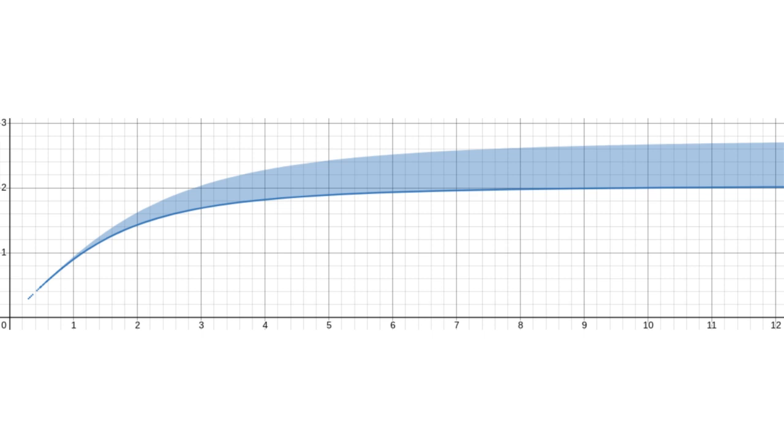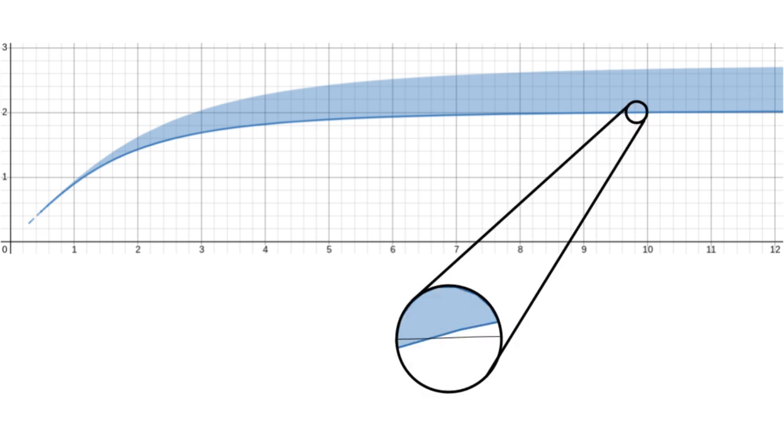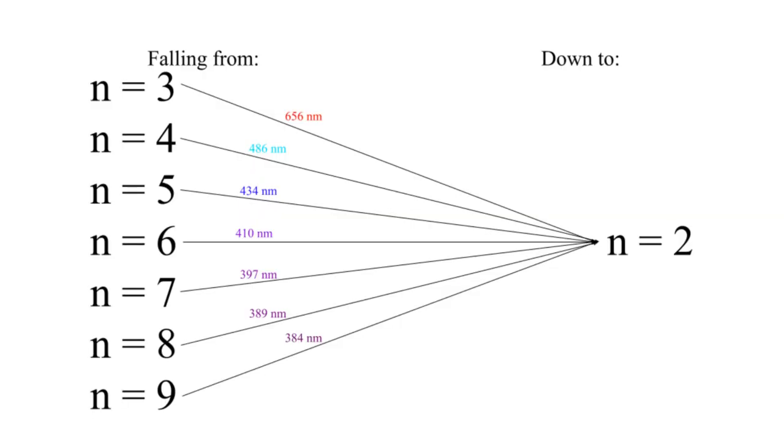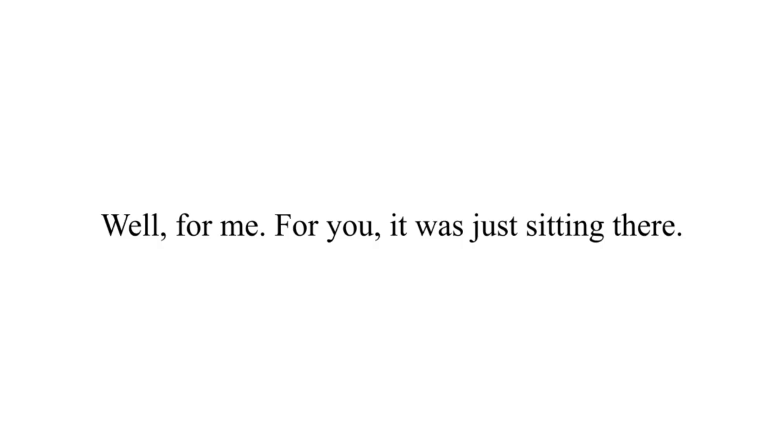So the question becomes, what whole number values of n1 and n2 satisfy this inequality? Don't worry, I did the math for you. It produces this graph, which looks like it goes off to infinity, but it only counts if both x and y are whole numbers, and it crosses over the 2 line between 9 and 10, and it never reaches 3, so it really only gives us 7 pairs of integer value. Using the same formula, we can determine their exact wavelengths as these. Whew! That was a lot of math, but it was necessary. Or was it?